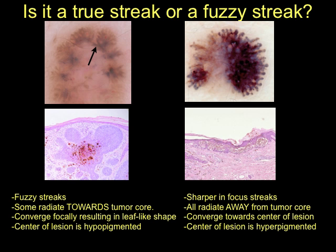The lesion on the left is a basal cell carcinoma with fuzzy streaks. Notice that some of the streaks, as highlighted by the arrow, are radiating towards the tumor itself. Also notice how the streaks are converging focally at the periphery, creating the so-called leaf-like structure, and that the central portion of the tumor is hypopigmented.